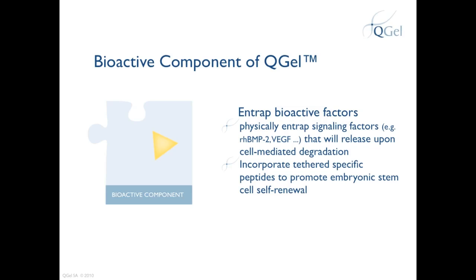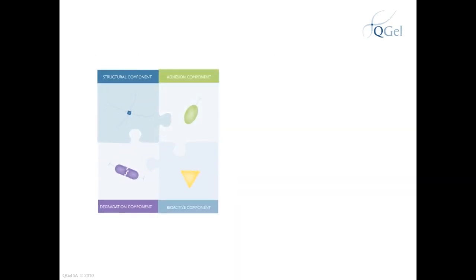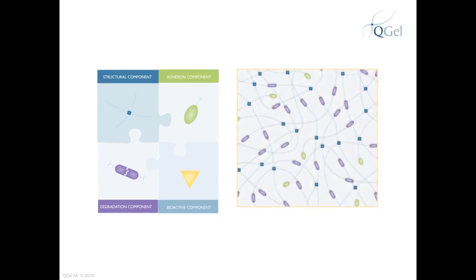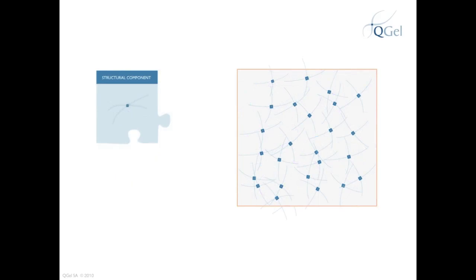Now that we have seen the four components used to bioengineer Q-Gel, let's look closely at how Q-Gel is assembled piece by piece. Reacting these four components in the right manner will result in the formation of the Q-Gel matrix, shown here on the right. To better understand how Q-Gel is bioengineered, let's remove the components and reassemble the matrix one piece at a time.